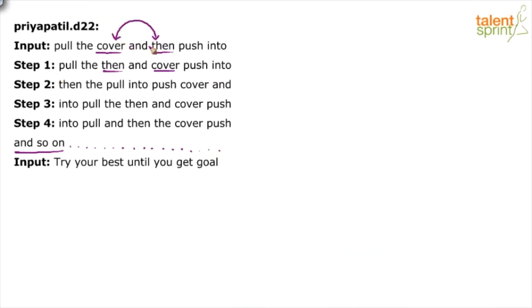In these kinds of questions where there is no definite output, numbering is very, very important. Usually the process is followed based on positions. So in step 1, we have interchanged the third and the fifth positions. There are 7 positions — 7 words, 7 positions. Out of these 7 positions, the third and the fifth have been interchanged.